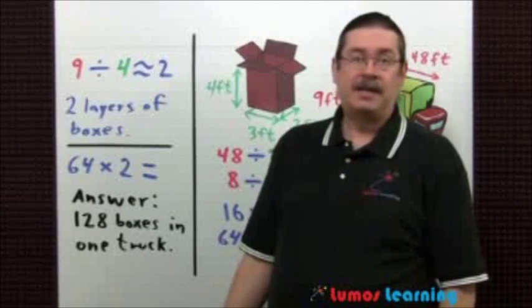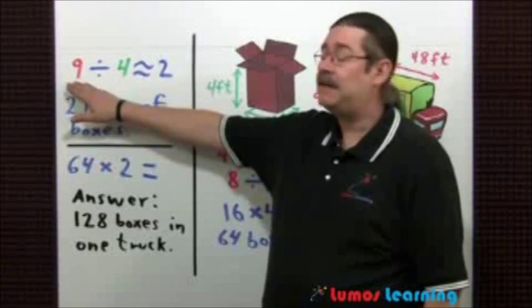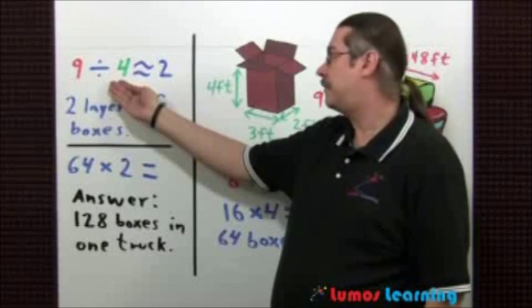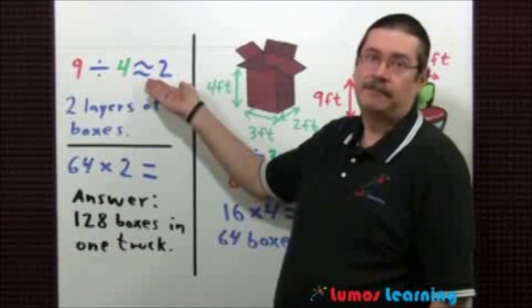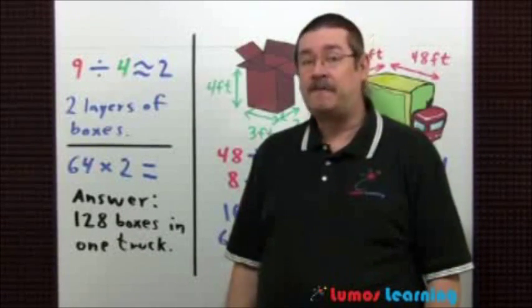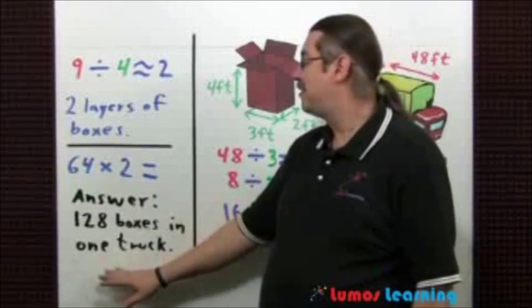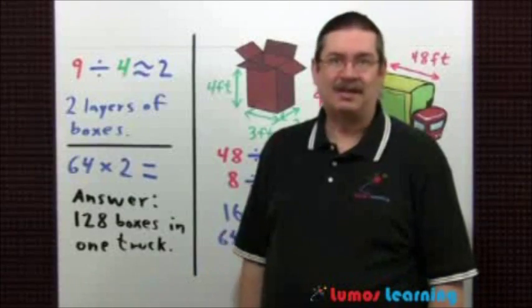Now we need to find out how many layers of boxes we can have in the truck. To find out, just divide the height of the truck, 9 feet, by the height of the box, 4 feet. This gives us approximately 2, which means there are 2 layers of boxes in the truck. For the final answer, just multiply 64 times 2. The answer is 128 boxes in one truck.